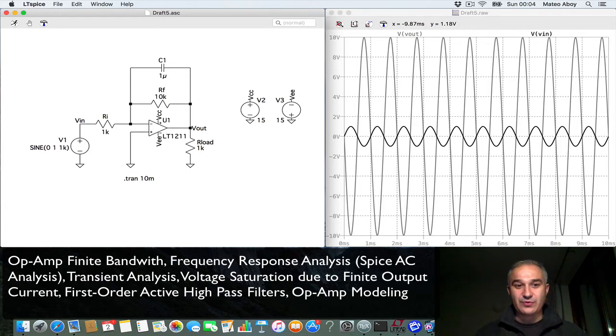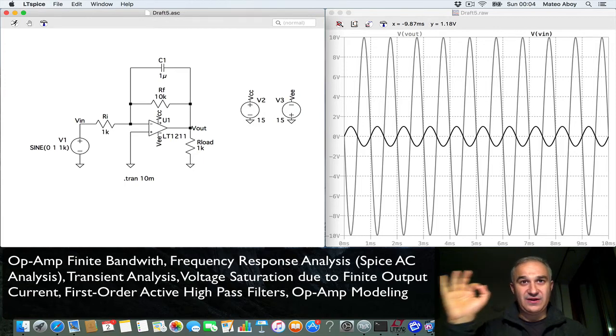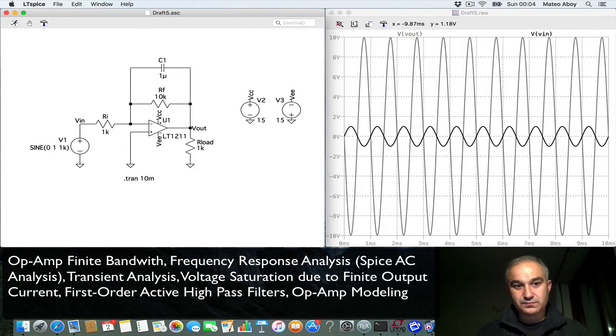However, at high frequencies, this is going to become a short, right? 1 over j omega c, omega is equal to infinity, in this case goes to 0. And if this is a short, it's like having an Rf of 0, in which case you have no gain, right?